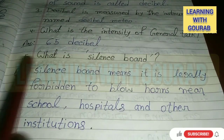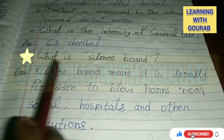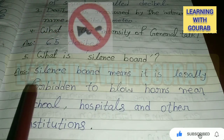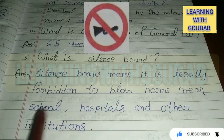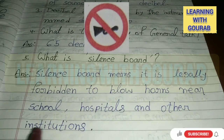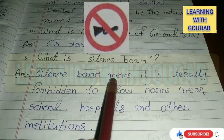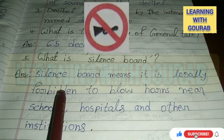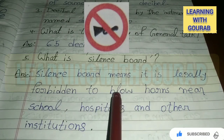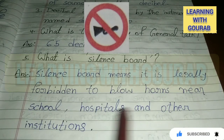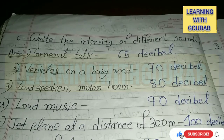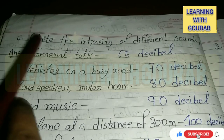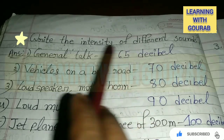Next question: What is the intensity of general talk? Answer: 65 decibels. Next: What is a silence zone? Answer: A silence zone means it is legally forbidden to blow a horn near school, hospital, and other institutions.